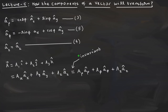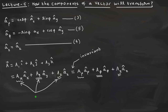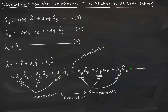Invariant means it doesn't change — the vector itself doesn't change. But what is changing is ax, which is now changed to a_rho. That means the numerical value is a totally different number. These things are known as components. So what is not changing is the vector itself, but what is changing is the components.